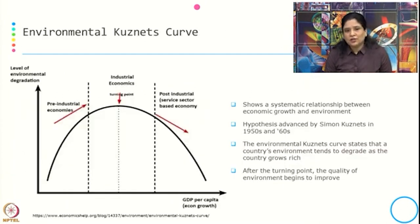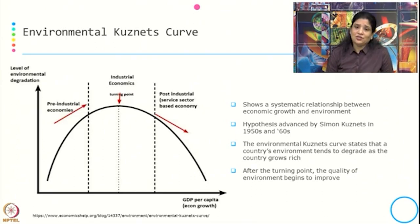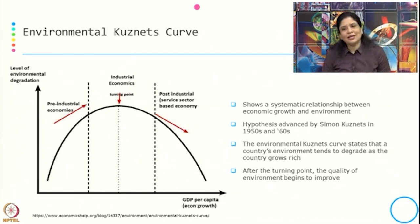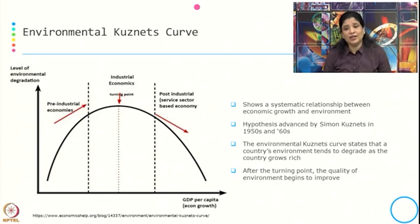Going to the third model we will discuss today — the Environmental Kuznets Curve (EKC). This is typically considered the most important model to understand the relationship between environment and economy. It shows a systematic relationship between economic growth and environment. This hypothesis was developed by Simon Kuznets in the 1950s and 60s.